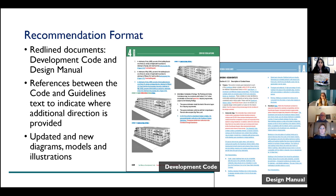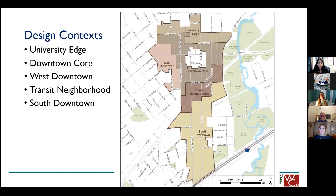Moving into the actual recommendations: this is an initial presentation of recommended changes to both the development code and the design manual. This is a high-level presentation — we're not getting into all the details of every single recommendation. We want to give you a better understanding of what you're looking at in the documents before you dive into the online survey. The full PDFs show red text for what was there before and recommended for removal, and blue text showing the recommended replacement text.